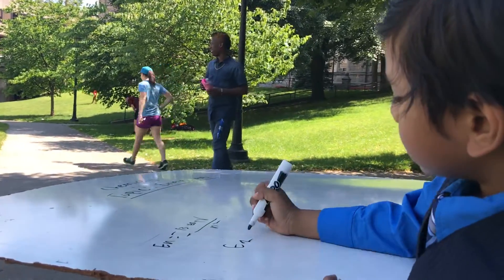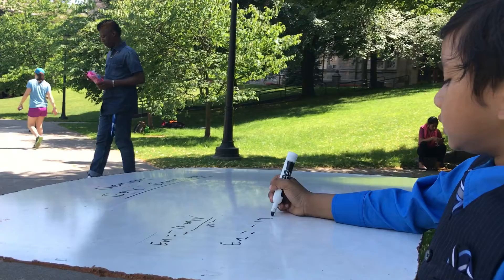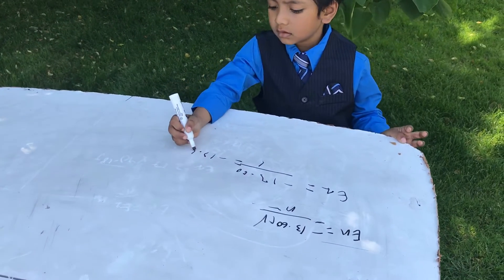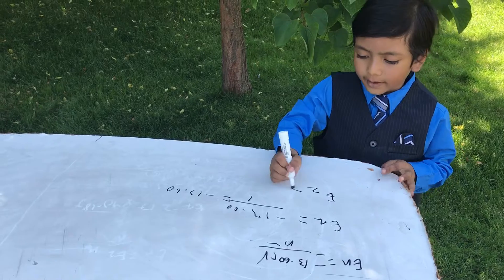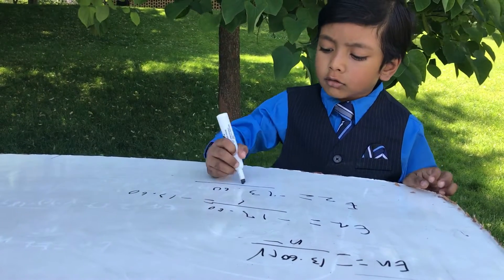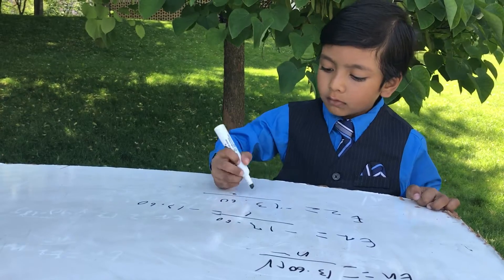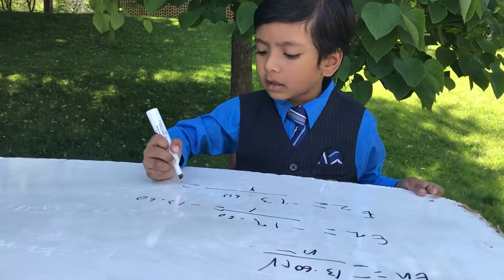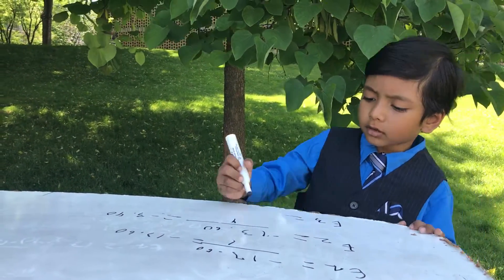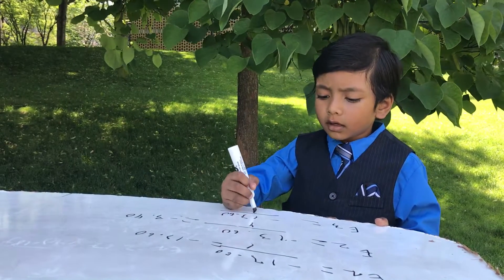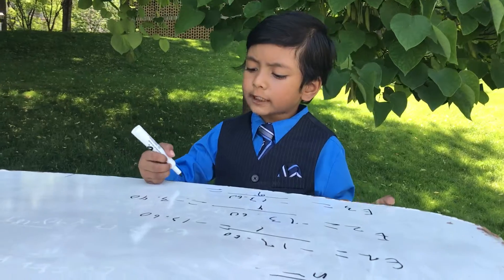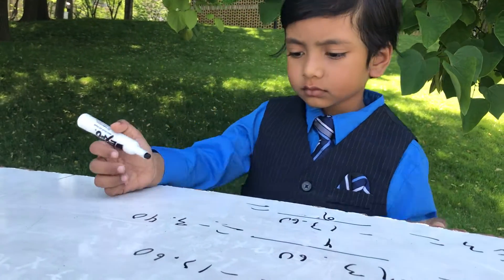E1 is equal to negative 13.60 over 1 squared, which is negative 13.60. E2 is equal to negative 13.60 over 2 squared, which is 4, giving negative 3.40. E3 is negative 13.60 over 3 squared, which is 9.